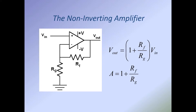For the non-inverting amplifier, the feedback still comes out and goes into the negative side, but the input comes into the non-inverting side, giving us a non-inverting output. These circuits are not as stable. The formula for Vout here is 1 plus Rf divided by Rg, multiplied by Vn. The gain is always going to be at least 1 plus Rf divided by Rg — so unity gain or greater.